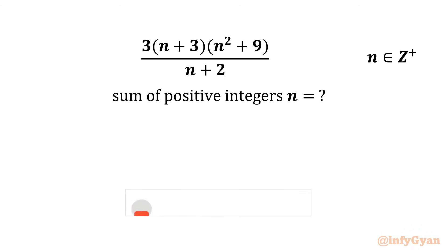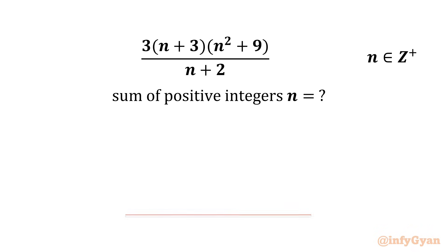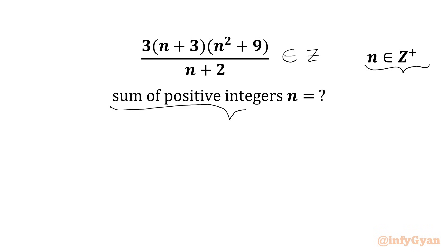Welcome to InfiJarn friends. Today in this video we have a very interesting question from AIME 2025. We have to find the sum of positive integers n such that 3 times (n+3) times (n²+9) over (n+2) is an integer, where n is a positive integer.